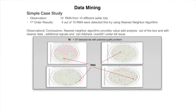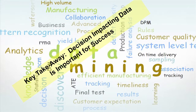A simple case in data mining: we had 10 RMAs from 10 different wafer lots, all randomly distributed when you looked at them — no correlation. But when you applied the nearest neighbor algorithm straight out of the box, four of the 10 RMAs correlated the first time. When you played with the algorithm a little bit, we got six out of 10 to correlate. The key takeaway: decisions impacting data is important for success. If you can't make good decisions, the value of your data is meaningless. Value is in how good you can make your decisions.